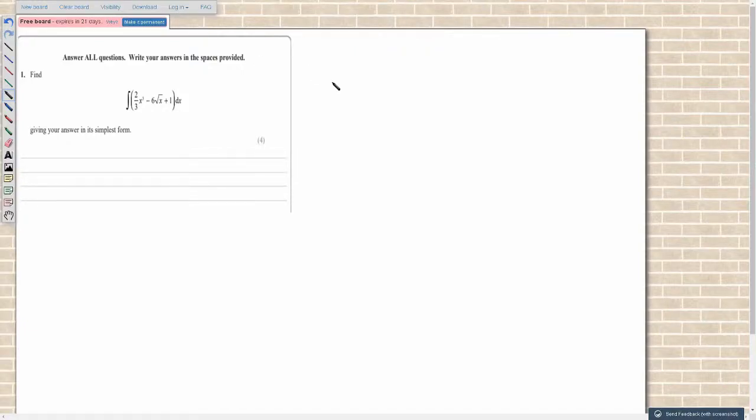This is question 1 from the May 2018 AS paper for A-level mathematics, the Edexcel paper. For question 1, it's just an integration question, a pretty basic expression. Hopefully you can see it clearly here, but if not, this is 2 over 3 times x cubed minus 6 times root x plus 1 dx.